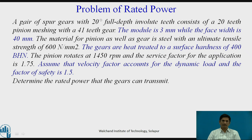Let us see the problem. It is asked to design a spur gear pair with 20 degree full depth involute tooth consisting of a 20 teeth pinion meshing with 41 teeth gear. The reduction is almost half. The module is 3 mm while the face width is 40 mm. The material for pinion as well as gear is steel with an ultimate tensile strength of 600 N/mm². The gears are heat treated to a surface hardness of 400 BHN.